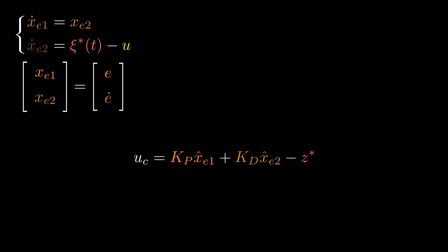We left the disturbance estimate in the control law as it was, but pay close attention to the error dynamics equations, where control signal u has a negative sign in front of it. Therefore, we need to change the sign of the disturbance estimate in the control law.